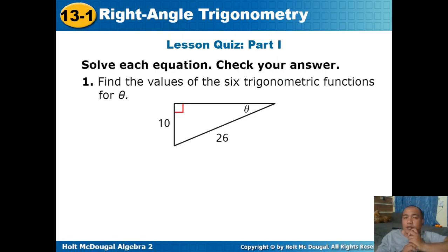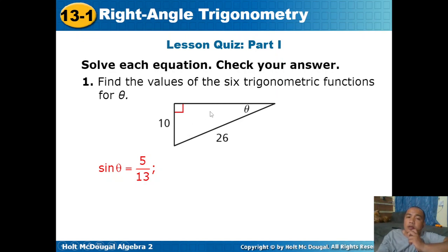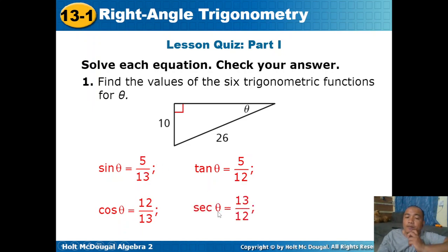For your quiz: find the values of the 6 trigonometric functions for theta, given hypotenuse 26 and shorter leg 10. The longer leg is 24. Sine theta equals 10 over 26, or 5 over 13. Cosine theta equals 24 over 26, or 12 over 13. Tangent theta equals 10 over 24, or 5 over 12. Cosecant theta equals 13 over 5. Secant theta equals 13 over 12. Cotangent theta equals 12 over 5.